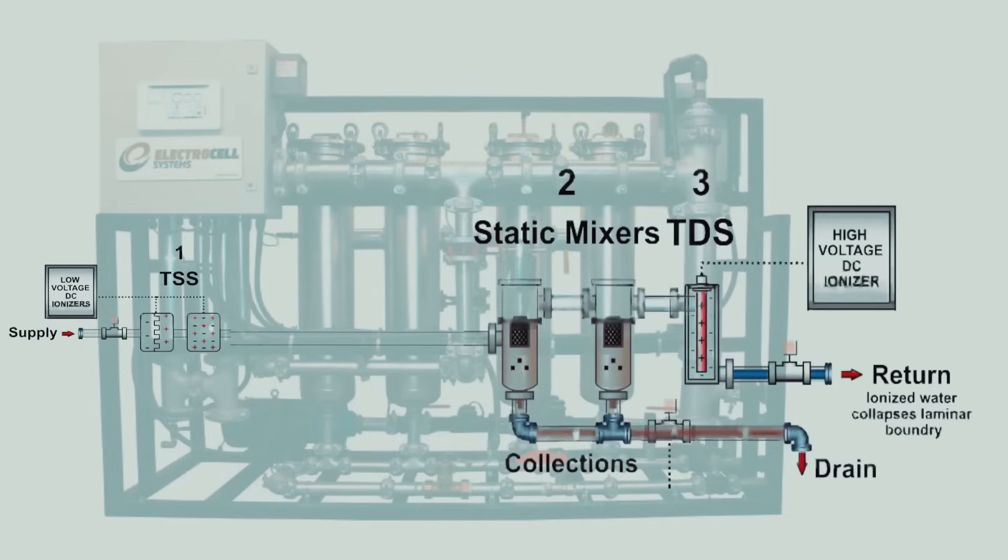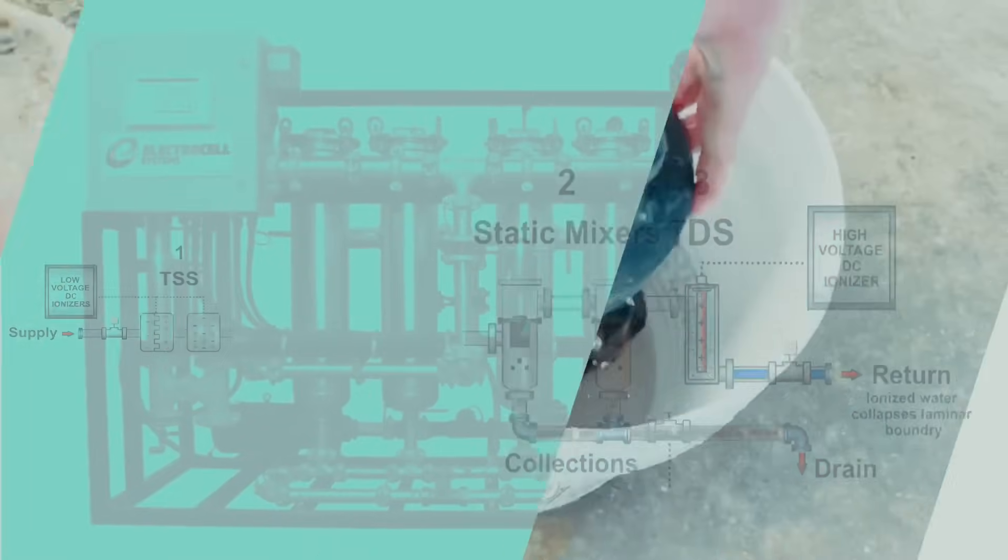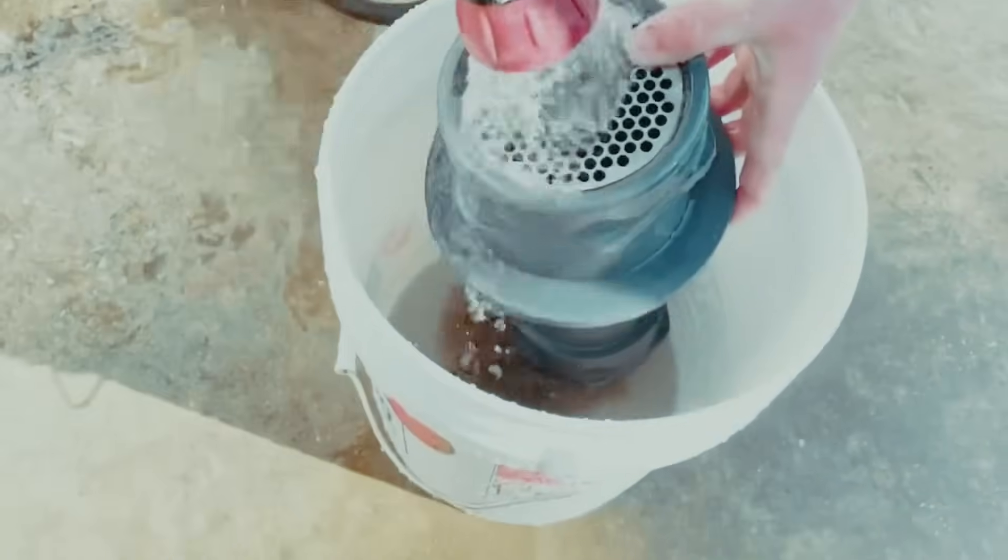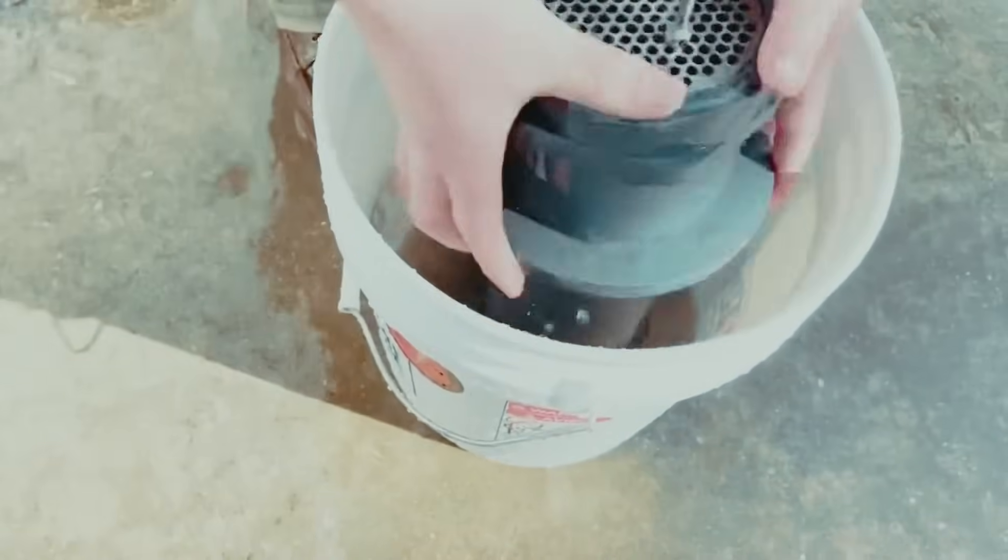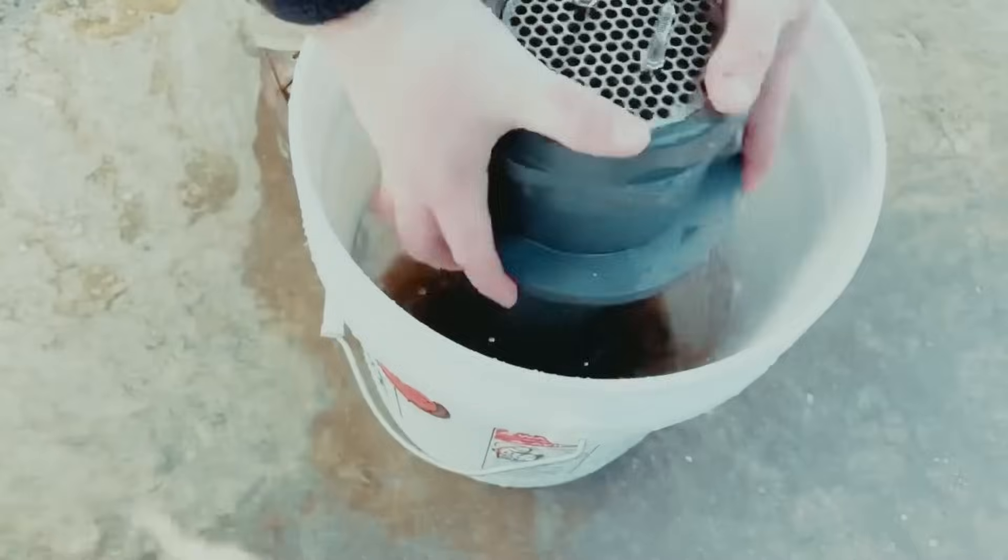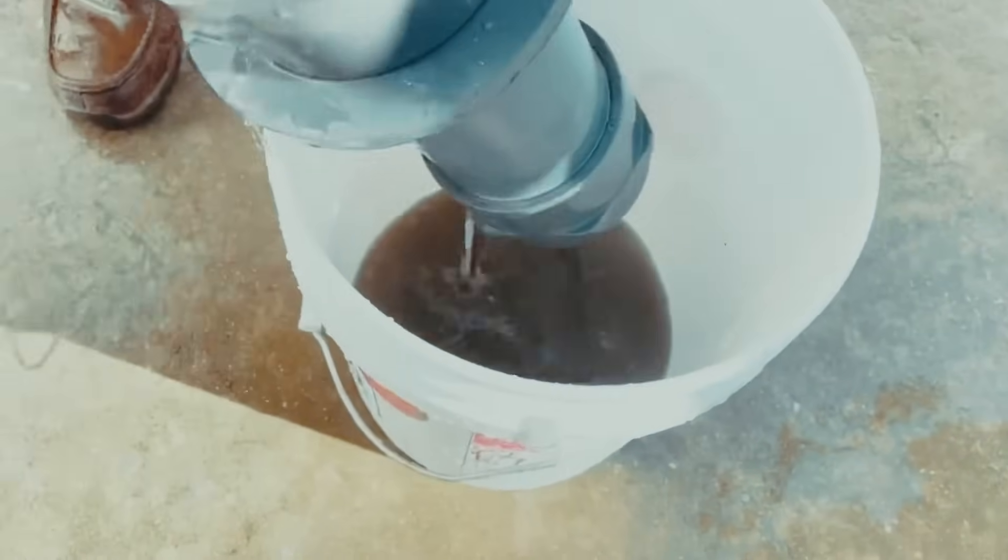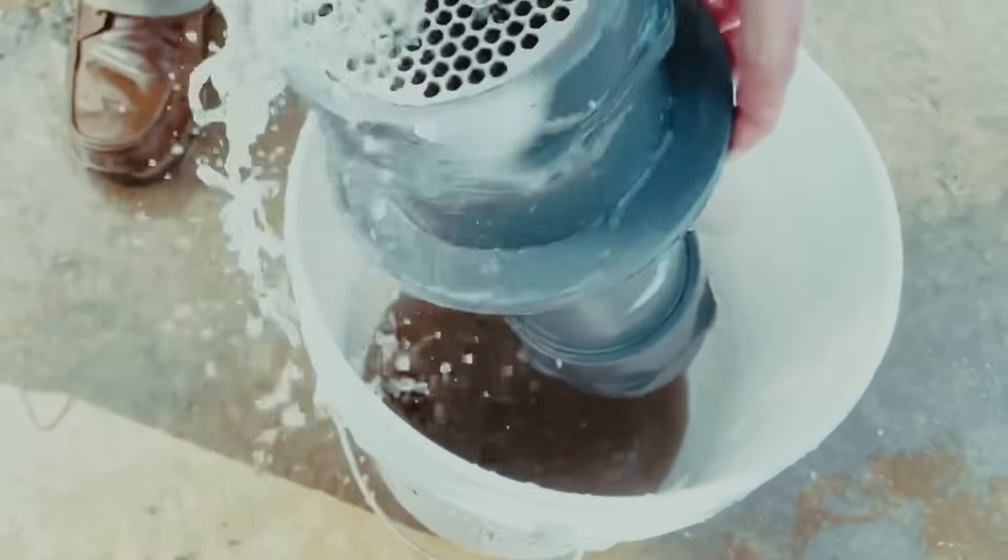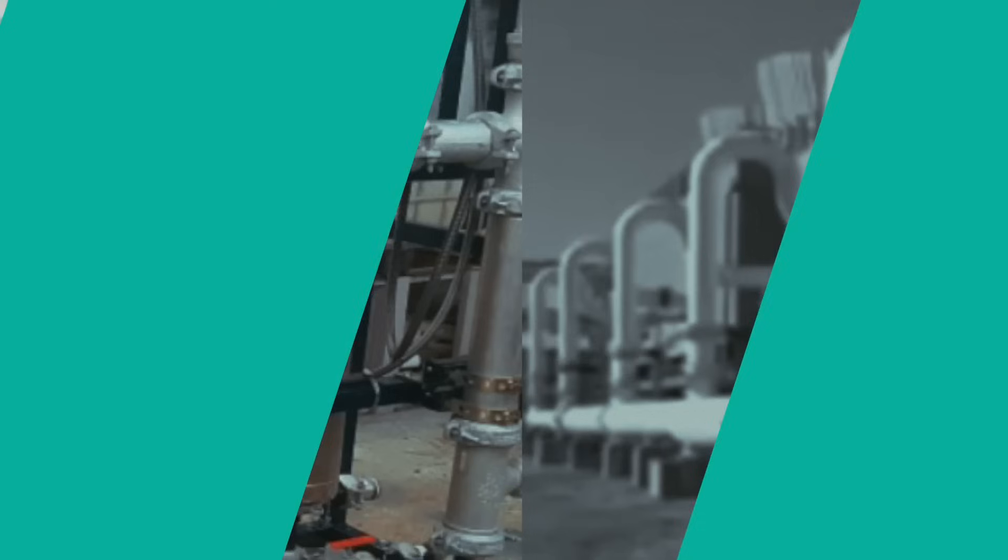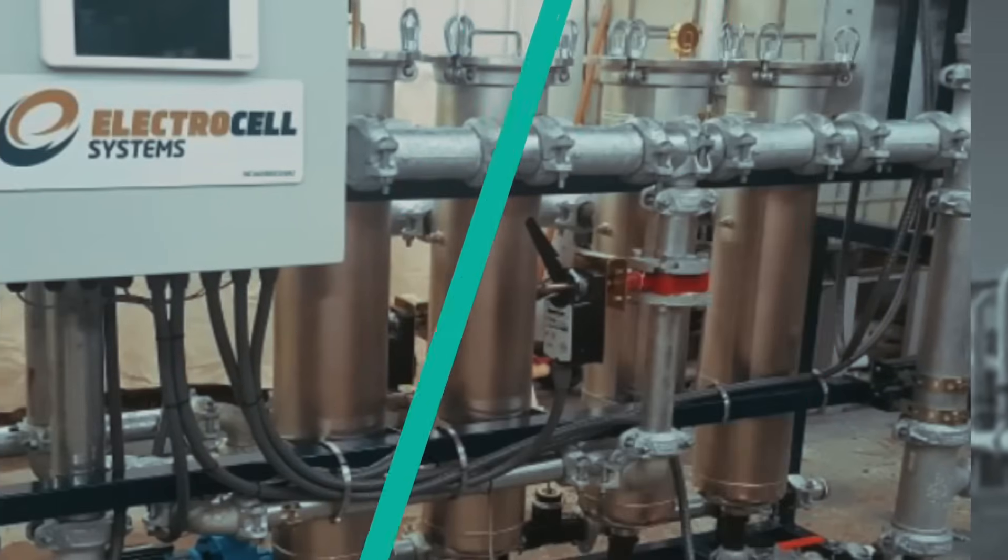Now that we've explained the three-phase process, let's look at a typical result. This is a customer-provided video of debris that was collected from just one static mixer vessel after a 24-hour period. This is what ElectroCell has removed from the water flow, allowing the unique performance improvement in open-loop chillers and cooling towers.